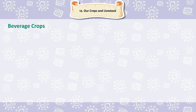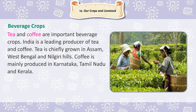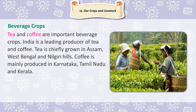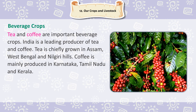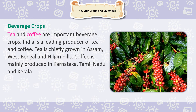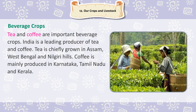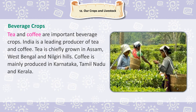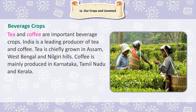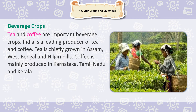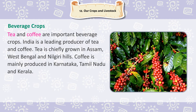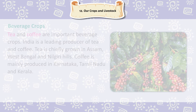Beverage Crops. Tea and coffee are important beverage crops. India is the leading producer of tea and coffee. Tea is chiefly grown in Assam, West Bengal and Nilgiri Hills. Coffee is mainly produced in Karnataka, Tamil Nadu and Kerala.